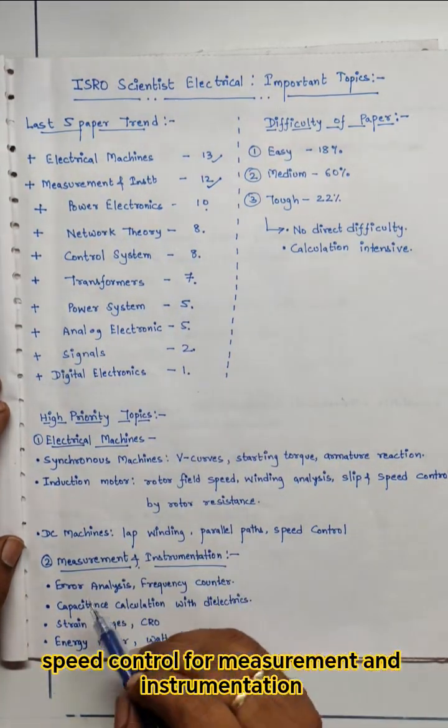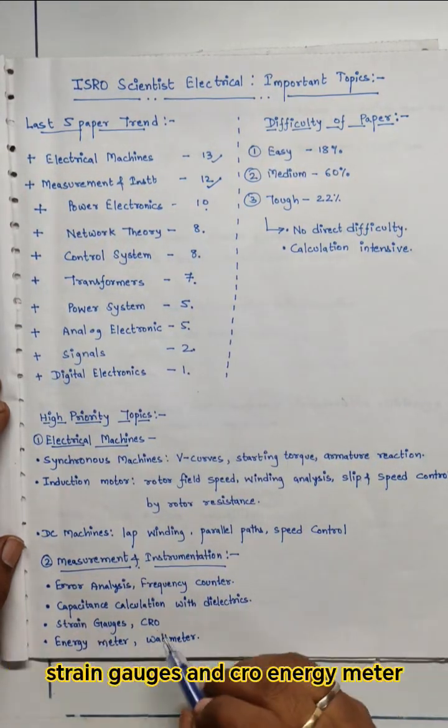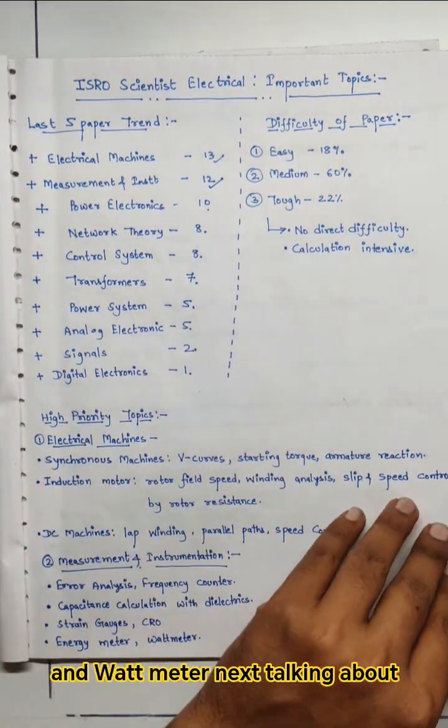For measurement and instrumentation you have to check error analysis, frequency counter, capacitance calculation with dielectric, strain gauges and CRO, energy meter and watt meter.